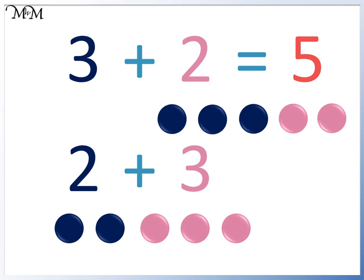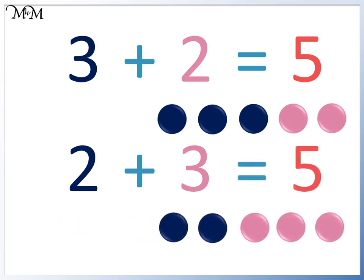In total, we have 1, 2, 3, 4, 5. We can see that the order in which we add numbers doesn't matter. We still get the same total. As long as the numbers are the same, the answer is the same.